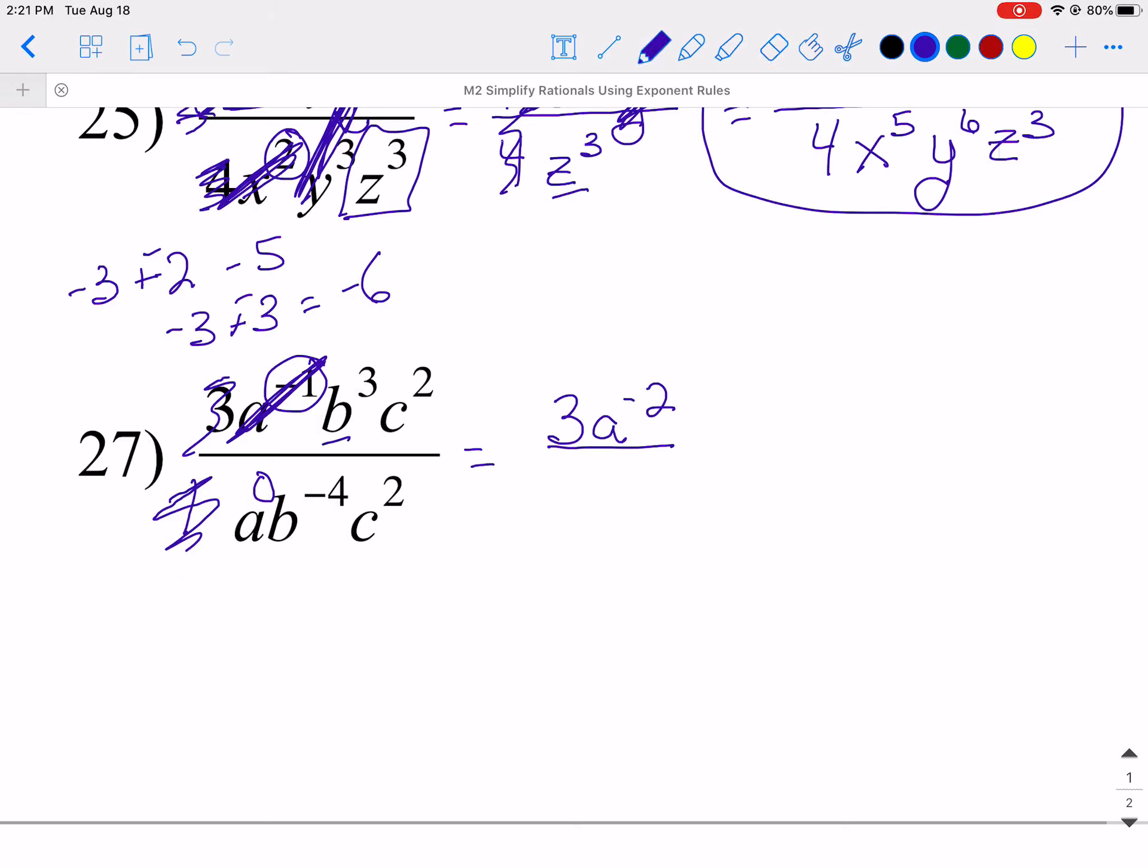All right, now I'm going to bring my b. So this is done. So my b over, make my fraction bar a little bit longer. And I have a 3, take away a negative 4. So 3, take away a negative 4. So changing that, so I've got 7, so b⁷. So that's good.